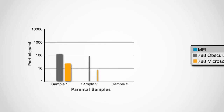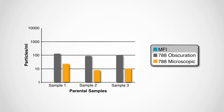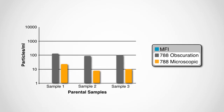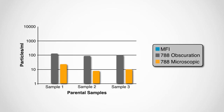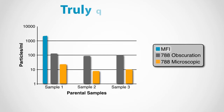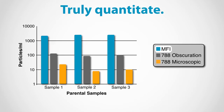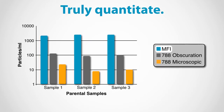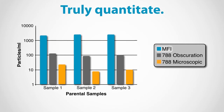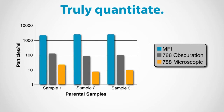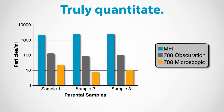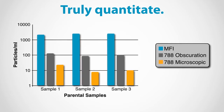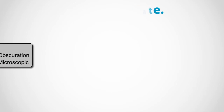Traditionally, light obscuration has been the method of choice, but it can give you false information. MFI gives you accurate quantitation of translucent protein particles so you can get a clear understanding of your protein formulation.